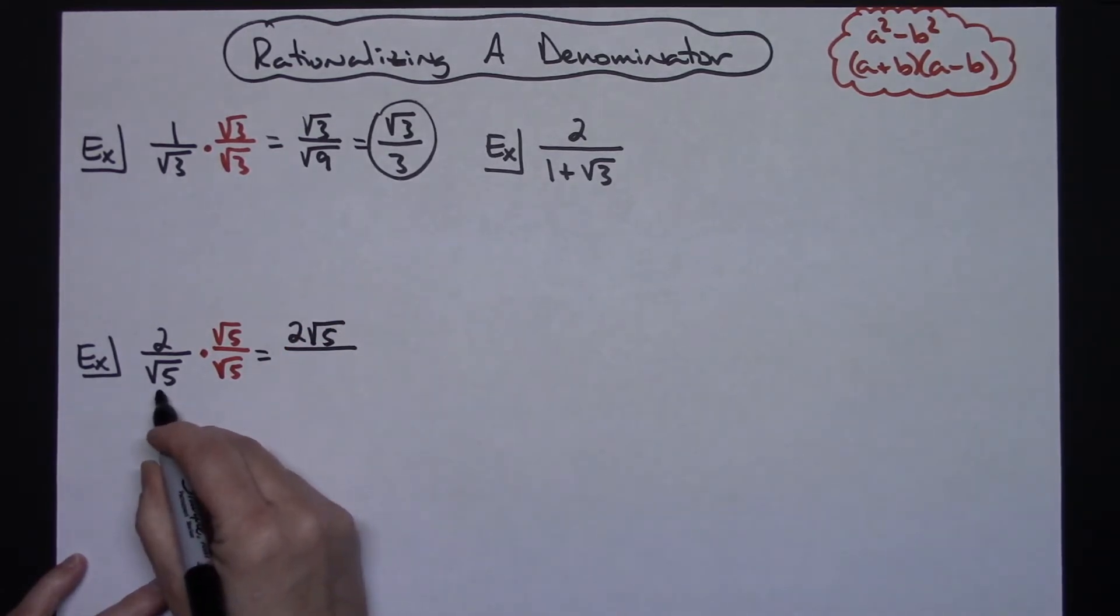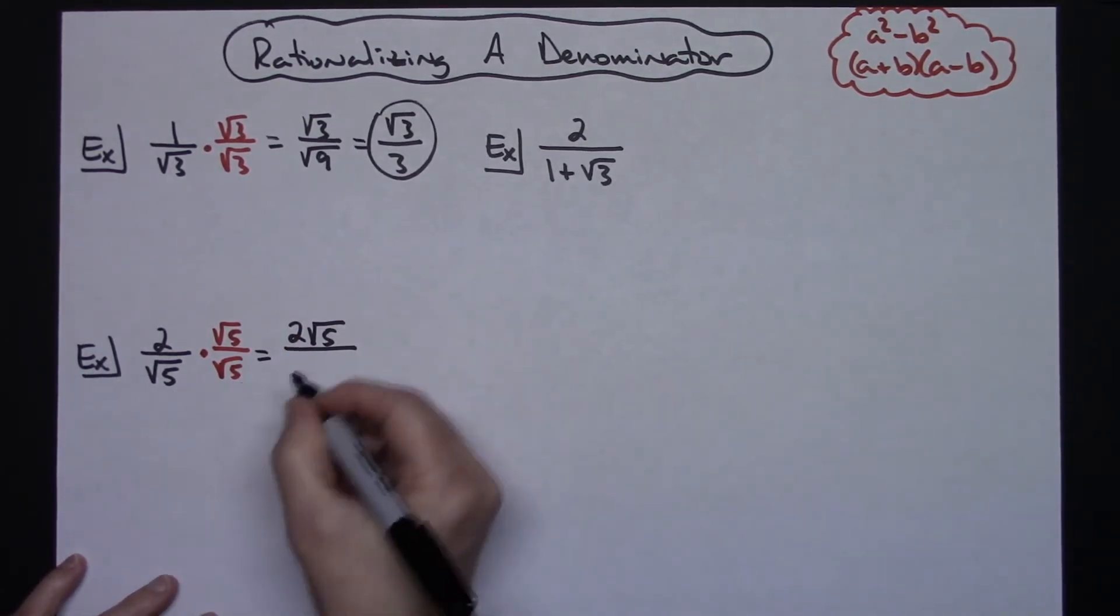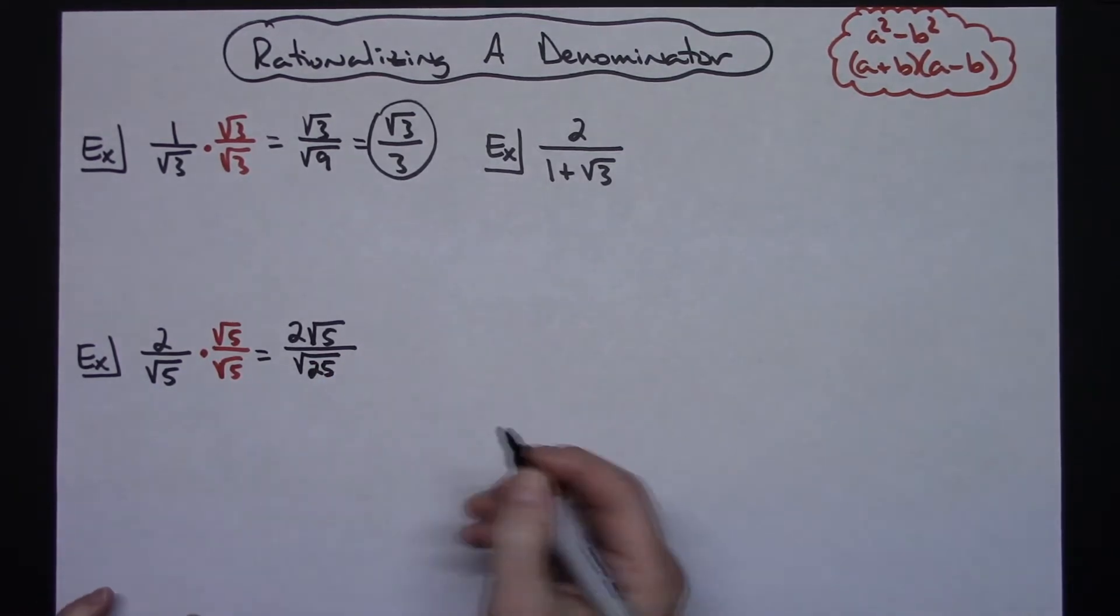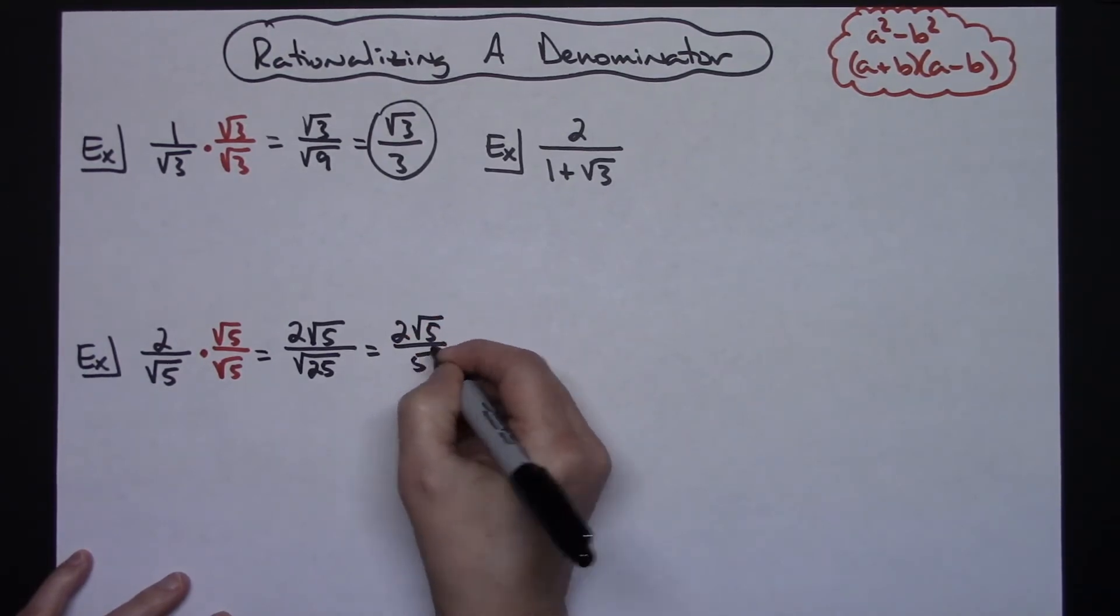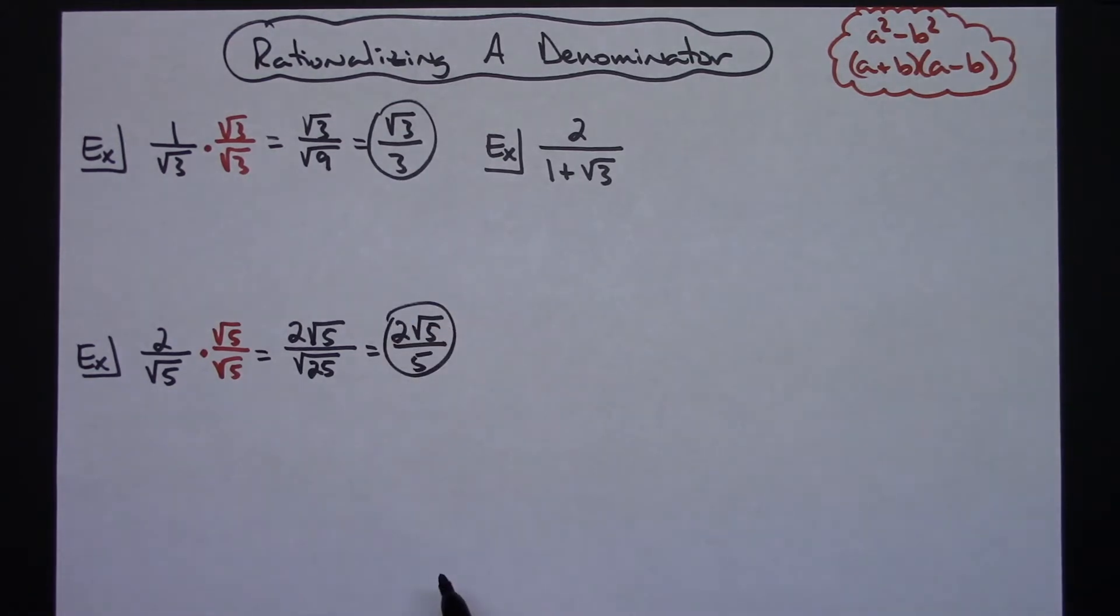And then again, if you need that middle step, 5 times 5 is 25, so square root of 25. If not, you can go straight through to the 2 square root of 5 all over 5. So again, kind of straightforward there as far as how to get rid of that radical in the denominator.